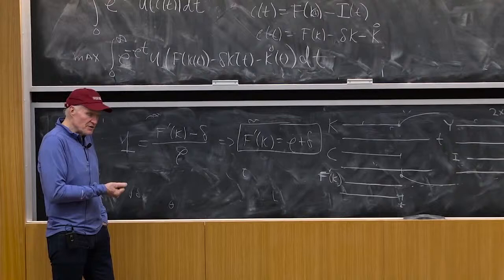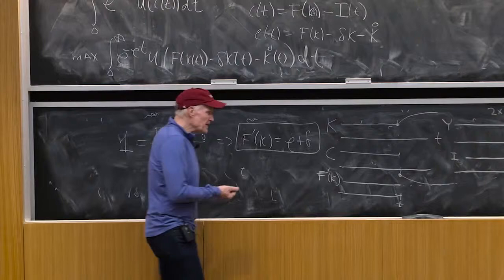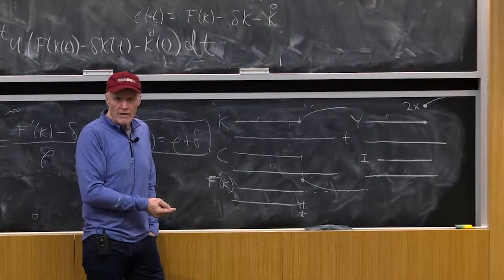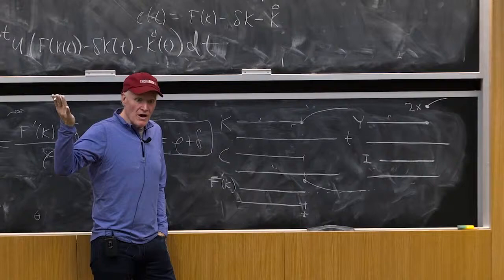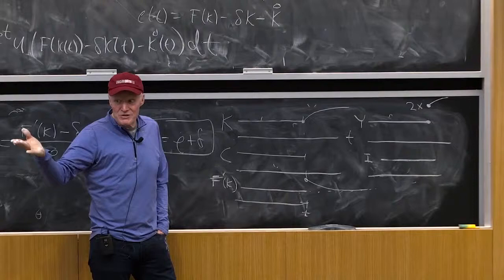Now, one thing that's interesting in this model is we're not really going to be able to say which way C is going to go in this model, because there's conflicting forces. On the one hand, you're richer. You're now twice as productive. You want to consume more.